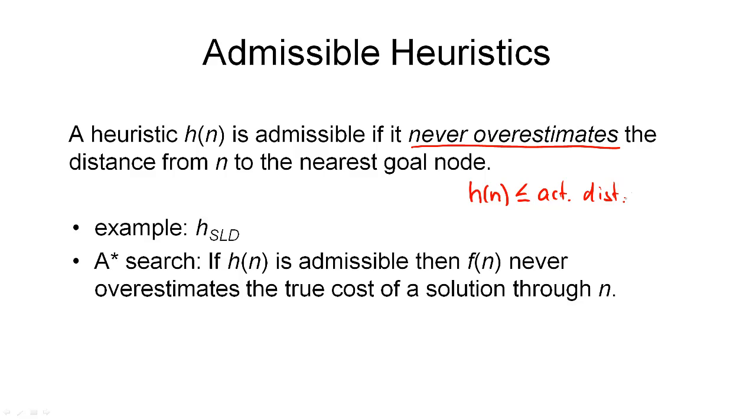For A star search, here's what that means. We said that the evaluation function f(n) represents the cost of the shortest path through node n to a goal node. So if the heuristic never overestimates the distance from n to the nearest goal node, then the evaluation function used by A star never overestimates the true cost of a solution through the node n.